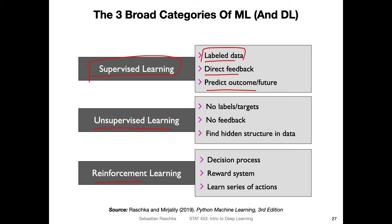Let me briefly go over the three categories. Unsupervised learning, in contrast to supervised learning, does not involve any labeled data — we don't have labels or targets, and we also don't have feedback. For example, in clustering we have cluster memberships, but we don't have any feedback. It's really about finding a hidden structure in the data.